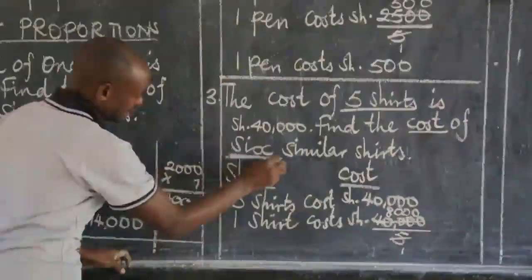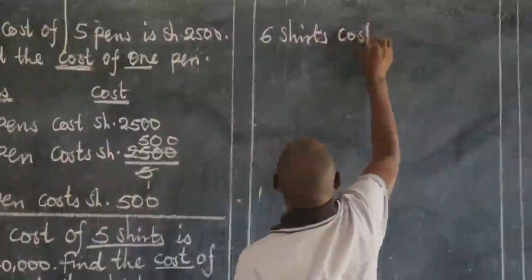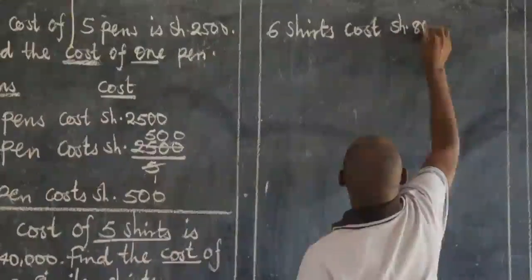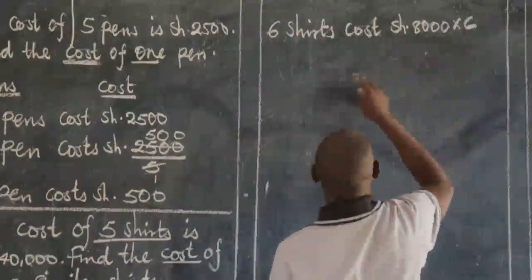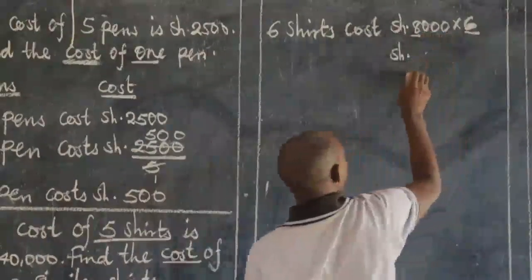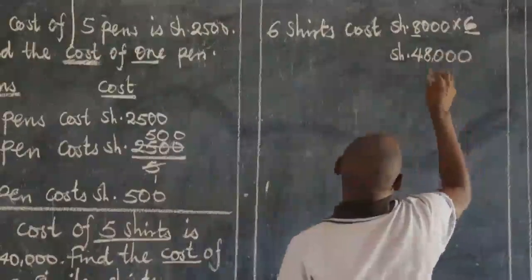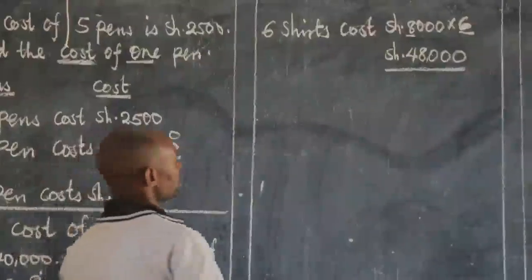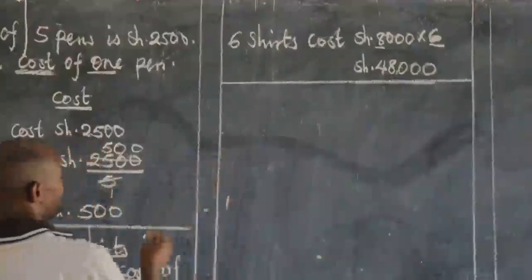What about when you buy six? Six shirts will cost the cost of one — which is 8,000 — multiplied by six. Six times eight gives 48, plus three zeros. So when you buy six shirts, you are going to pay 48,000 shillings.